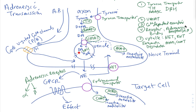Similar to dopamine, norepinephrine can be recycled into the vesicle via VMAT, since it is also a monoamine. Extraneronally, MAO can metabolize it, and because norepinephrine is a catecholamine, COMT can also act on it. In summary, the key differences for adrenergic signaling are: the extra enzyme dopamine beta-hydroxylase, adrenergic receptors of alpha and beta subtypes, and the norepinephrine reuptake transporter — but there is a lot of overlap between adrenergic and dopaminergic transmission.